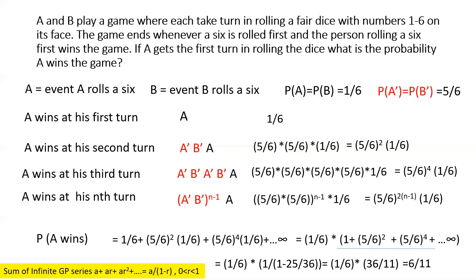The probability of A winning is 6/11, which is actually better than 50%. That makes sense because A gets his turn first — there is a scenario where A can win without B even rolling the dice, which puts B at slightly worse odds. Note that 6/12 would be exactly 50%, but 6/11 is a little more than 50%. We get the answer by summing probabilities across all cases of A winning at different turns, using the infinite GP series result.